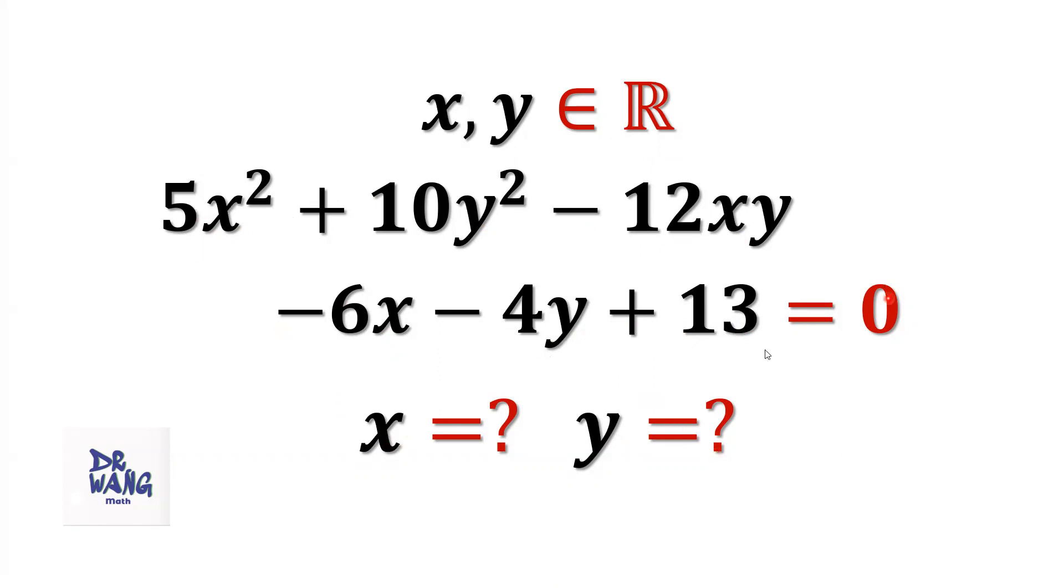We have one quadratic equation containing two variables x and y. In general, it is difficult to solve because we don't have enough information. In general, we need two equations to solve for two variables. For this question, we do have an extra condition. Here, x and y are real numbers. How to solve this kind of question?